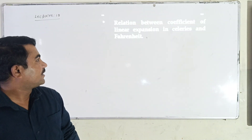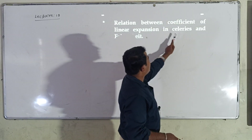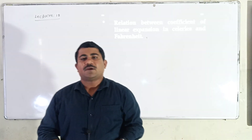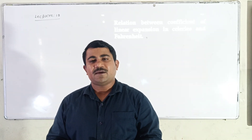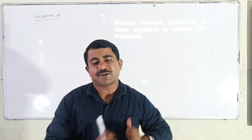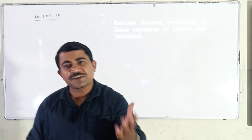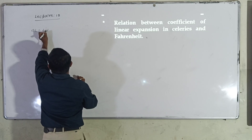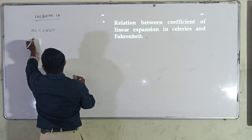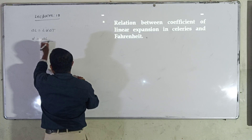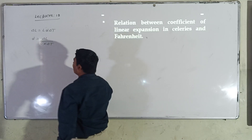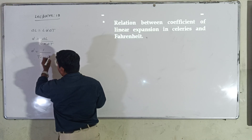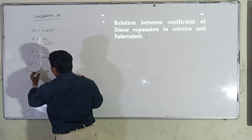Synopsis number 1: the relation between coefficient of linear expansion in degree Celsius and Fahrenheit. We know that when the temperature of a one-dimensional material increases, its length gradually changes. The change in length is given by delta L = L · α · delta T. From this, alpha is equal to delta L divided by (L · delta T), showing that alpha is inversely proportional to temperature, or alpha = 1/theta. Remember this equation.